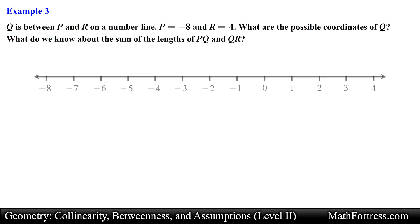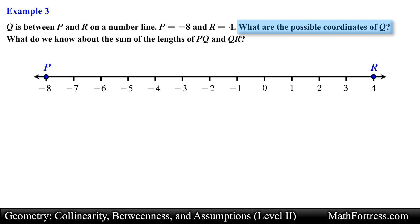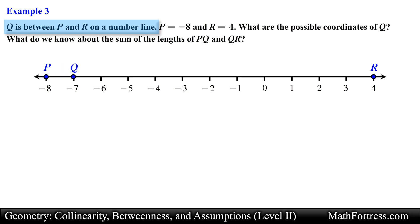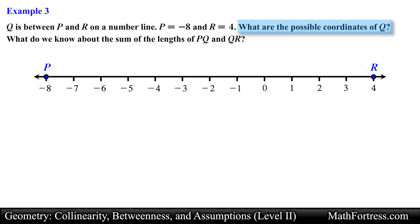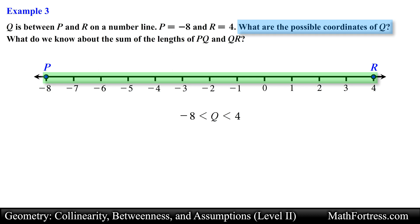Recall that if a point is between two other points then all three points are collinear. We can represent all the possible coordinates of point Q by using inequalities. We know that point Q is between point P and point R. This means that the coordinates of point Q will be a number between the coordinates of point P, in this case negative 8, and point R, in this case positive 4. So the possible coordinates of point Q will be a number between negative 8 and positive 4.